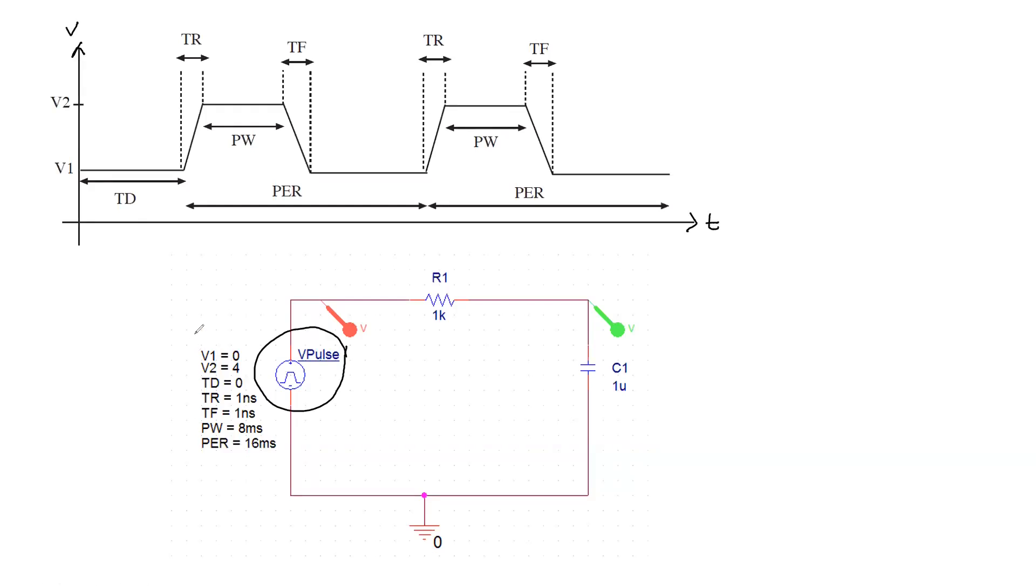If you look at the way it works, there are a lot of parameters you can control. The first one is V1, that's the offset voltage. If this is the zero voltage where you want to work, I want to work with zero volts. V2 is the peak voltage.